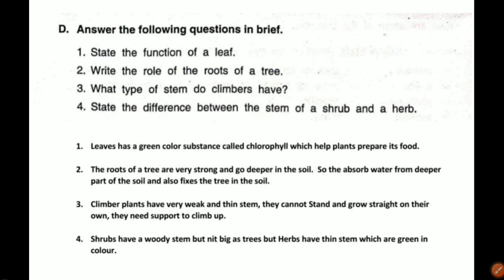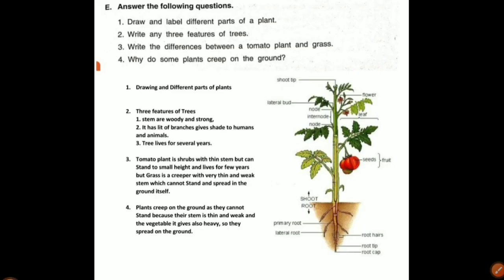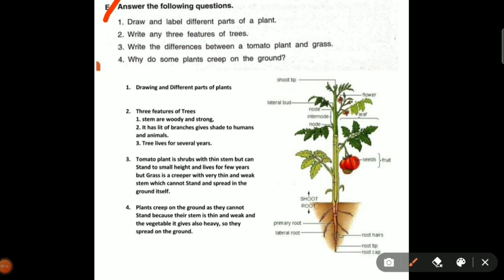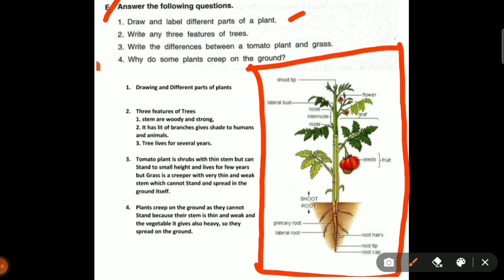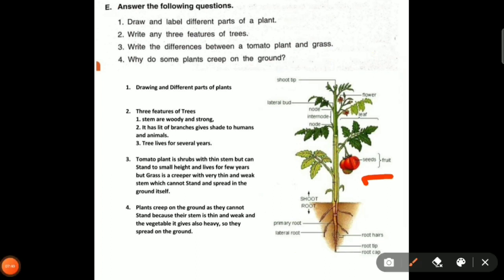Let's go to the next one. Section E: answer the following questions. Draw and label different parts of a plant. Below the soil is the root, and above the soil is the shoot. The diagram includes seeds, fruits, leaves, buds, and flowers. You can draw a plant and mention the names in your notebook or book.